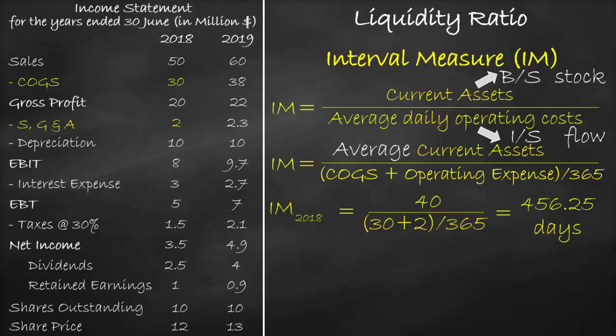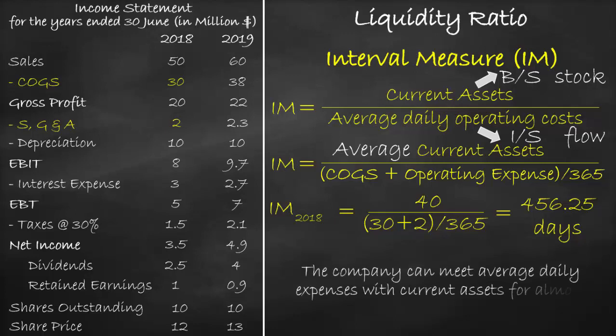As you can see, the unit of the interval measure is a day. This means that the company can meet average daily expenses with current assets for almost 456.25 days. The higher the interval measure ratio, the better.